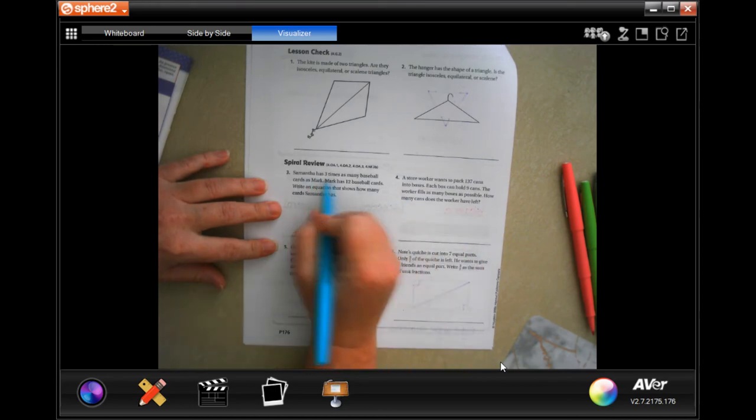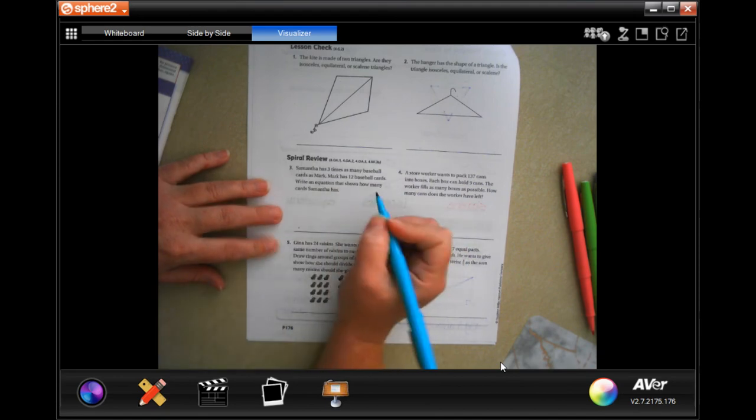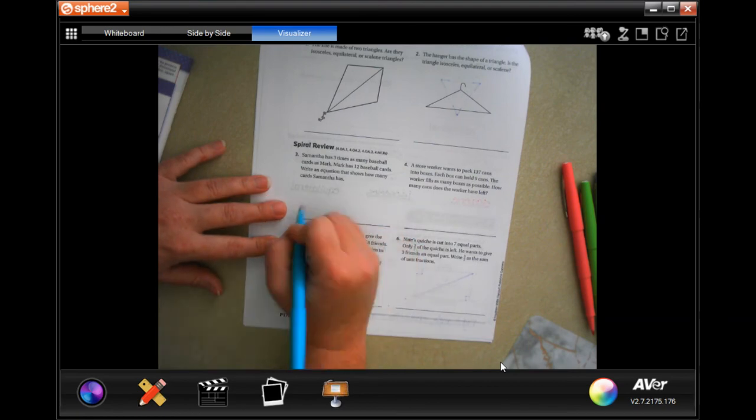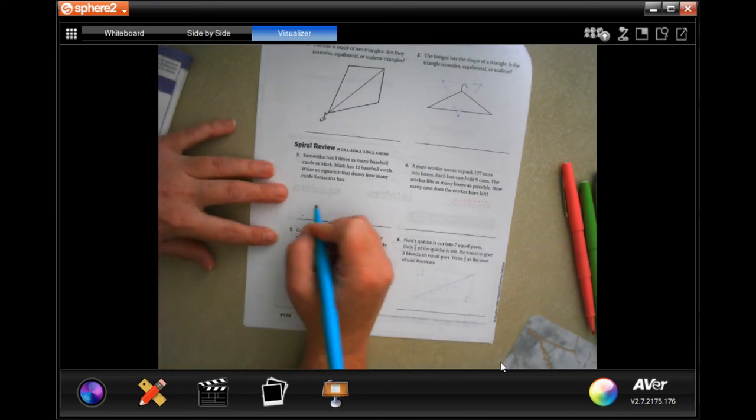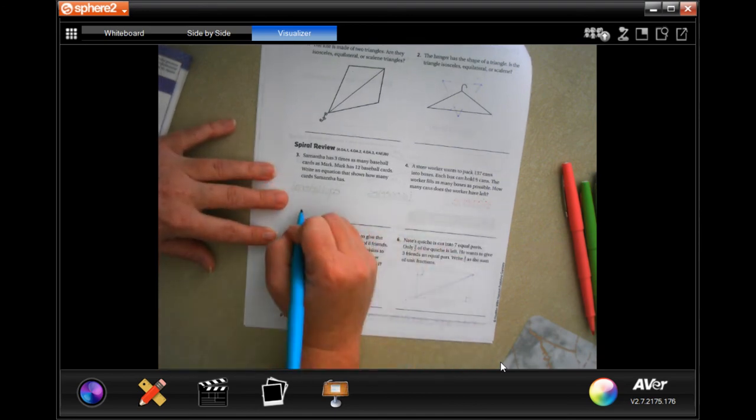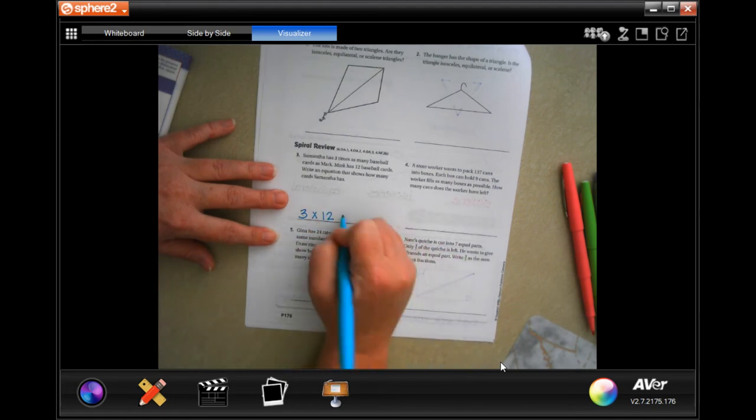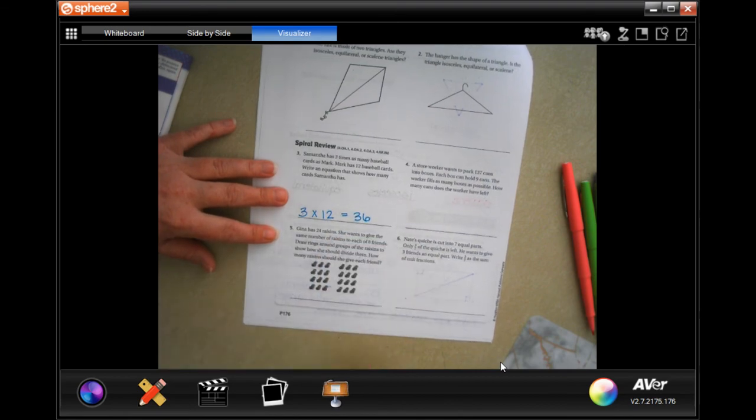So Samantha has three times as many baseballs as Mark. Mark has 12 baseball cards. Write an equation that shows how many cards Samantha has. Well, Samantha has three times what Mark does, and Mark has 12, so she has 36. Done.